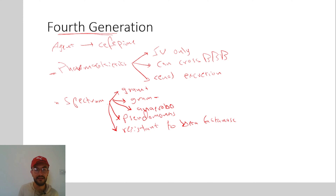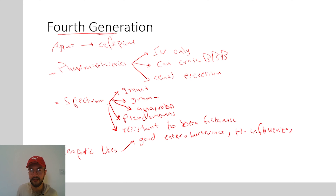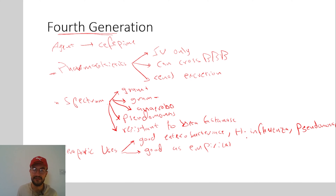Regarding the therapeutic uses of the fourth generation cephalosporins, they are active against Enterobacteriaceae, which includes E. coli, Salmonella, Shigella, and other bacteria. They are also good against Haemophilus influenzae and against Pseudomonas. They are also good as empirical therapy because they work well with gram positives, gram negatives, and anaerobes.